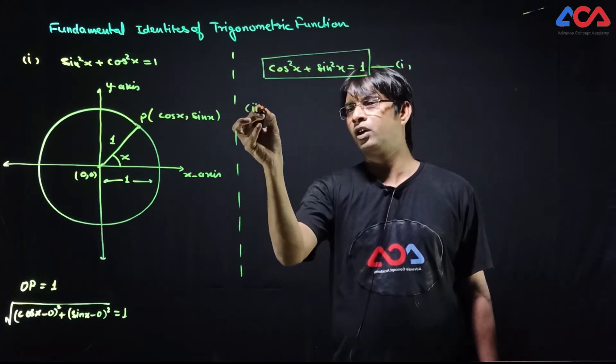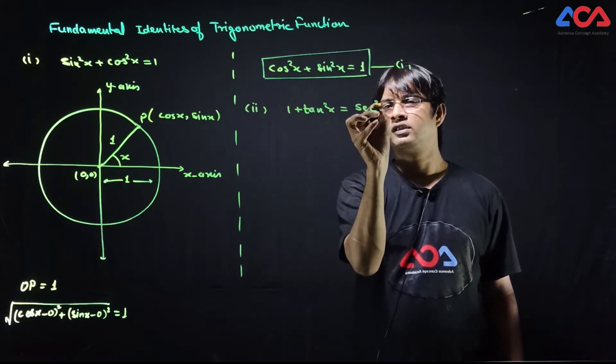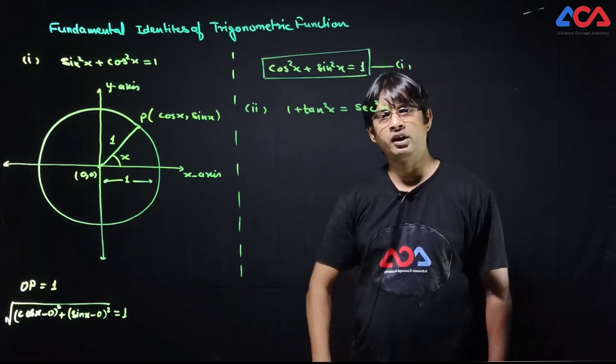Second identity is 1 + tan²x = sec²x. Let's prove this.